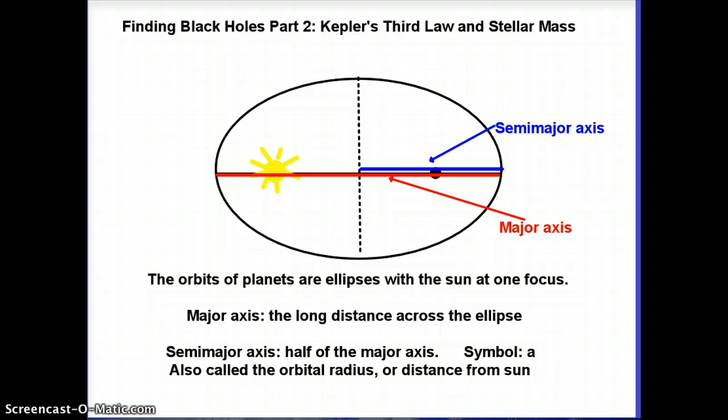We've already talked about one step that we need to go through to find black holes, which is to study the velocities of objects that are falling into a black hole by using the Doppler effect.